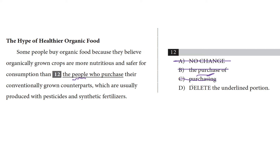That leaves choice D. Let's see what happens if we delete the underlined portion: 'Some people buy organic food because they believe organically grown crops are more nutritious and safer for consumption than their conventionally grown counterparts.' It's comparing organic crops to their conventionally grown counterparts — comparing crops to crops. That's our answer, because it's a logical comparison.